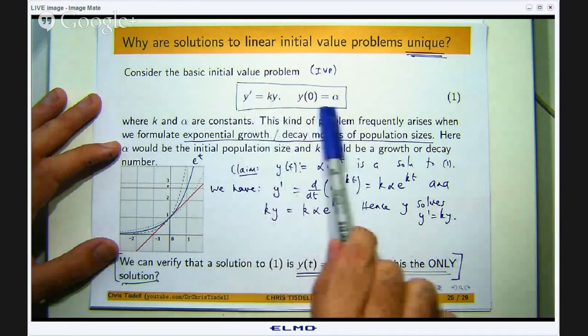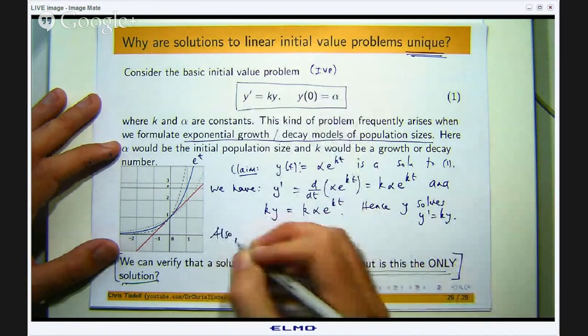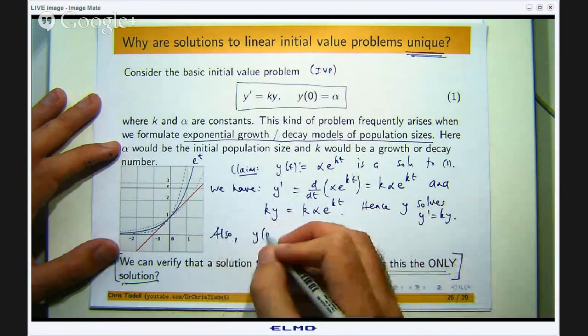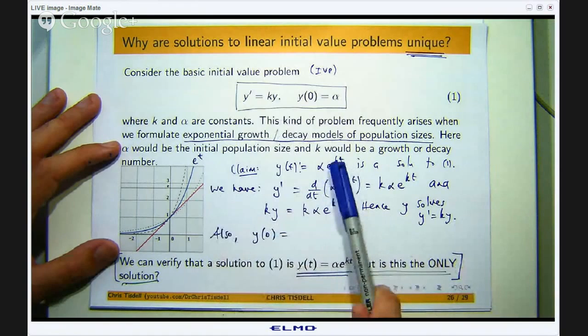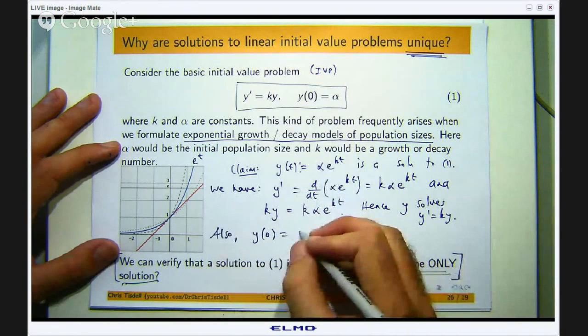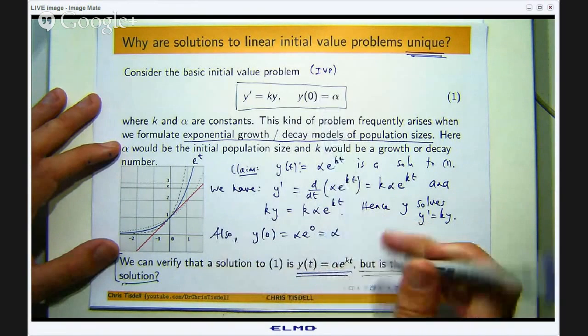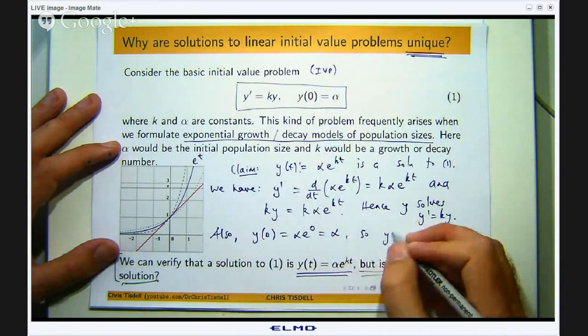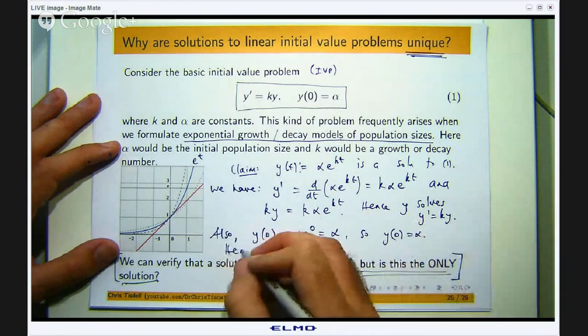Okay so this is satisfied. The only thing we need to check now is the initial condition. So let us go up to our function, plug in t equals 0. I will get e^0 which is 1 and just multiply it by α. And that shows that the initial condition is satisfied.